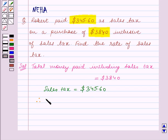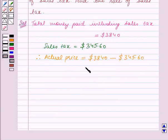Therefore, actual price is equal to the price including the sales tax, that is $3,840, minus the sales tax which is $345.60. This is equal to $3,494.40.